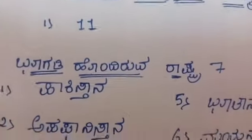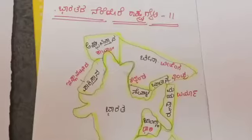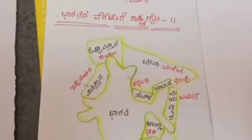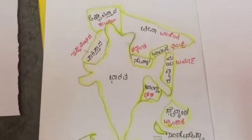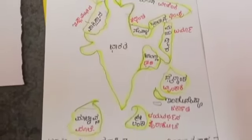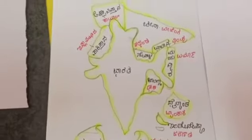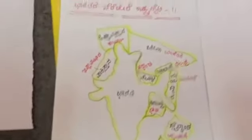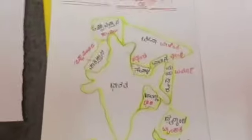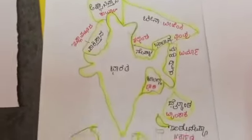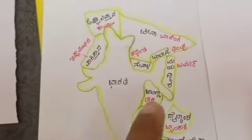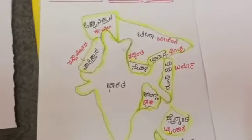You can see the map. You can see that the map is very easy. We have 10 countries.